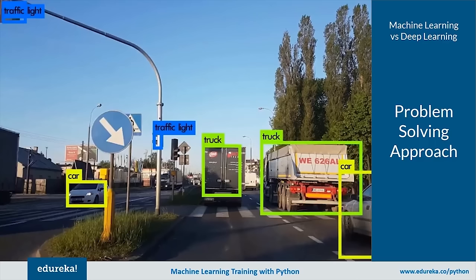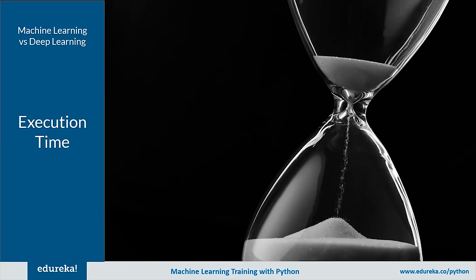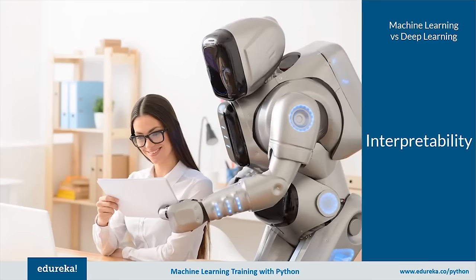On execution time: deep learning takes a long time to train — potentially two weeks or more from scratch — due to the large number of parameters. Machine learning takes much less training time. However, during testing, deep learning runs much faster, whereas algorithms like KNN (a machine learning algorithm) increase in test time as data size grows. On interpretability: deep learning doesn't reveal why it gives a certain result — we can't easily interpret the reasoning.